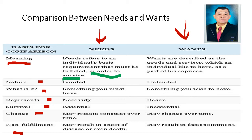Regarding nature, needs are limited while wants are unlimited. In the law of supply and demand, the wants of human beings are unlimited. However, the resources we need are scarce — money, methods or methodology, raw materials, machinery and equipment, and even employees. Needs are something you must really have, while wants are something nice to have, good to have — non-essential. Needs represent a necessity or requirement, while wants represent only a desire or aspiration.